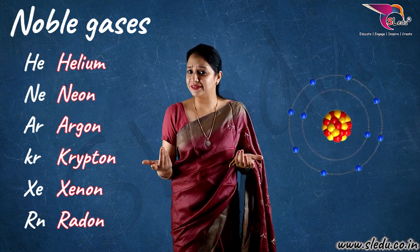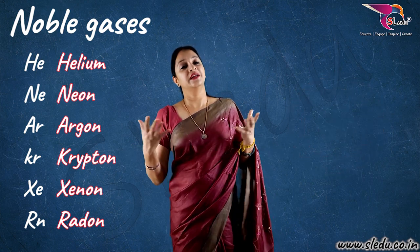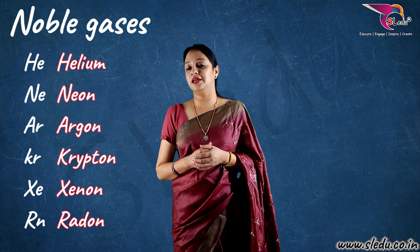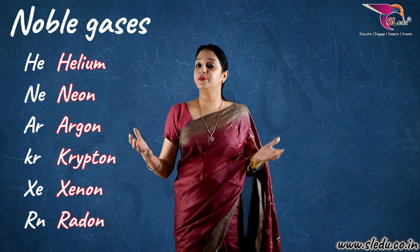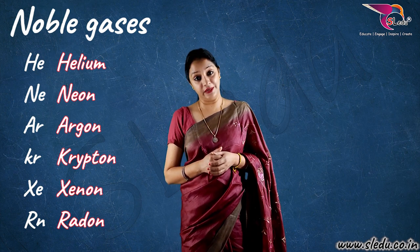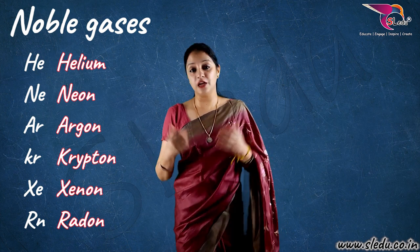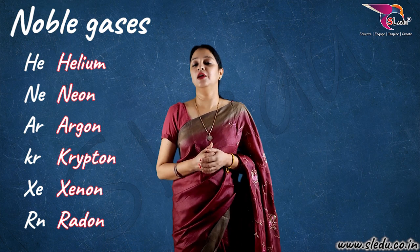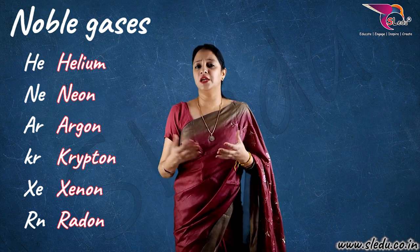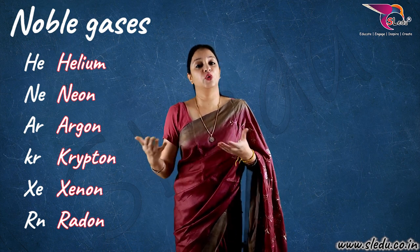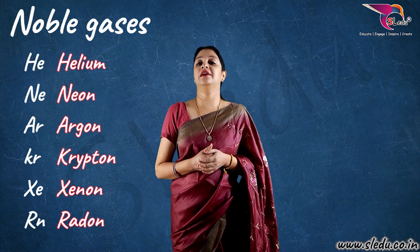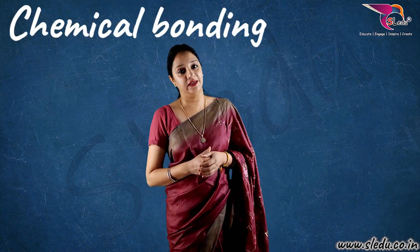What I am talking about is that every element in the world wants stability. And for that stability, their last shell needs to be complete — like noble gases. That is why an element loses electrons from the last shell, or gains or shares. So, today I am telling you this topic: Chemical bonding.